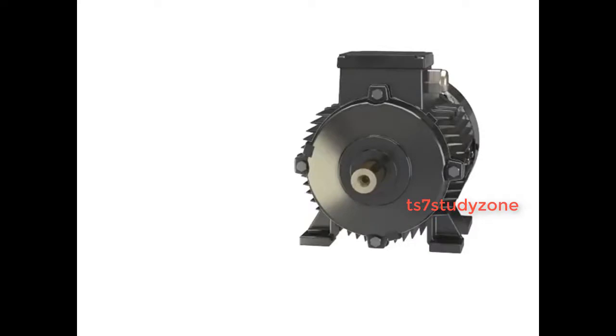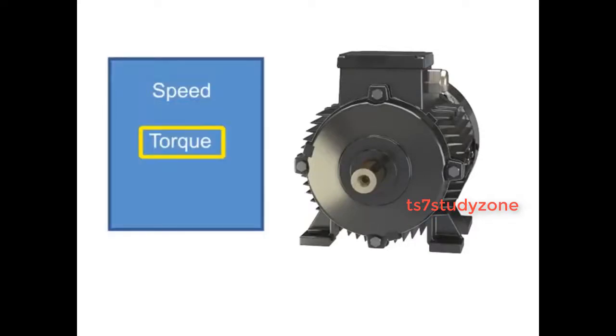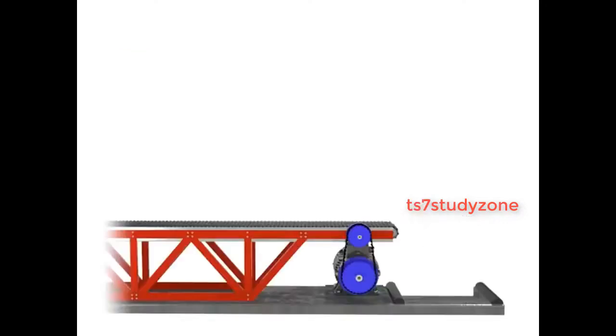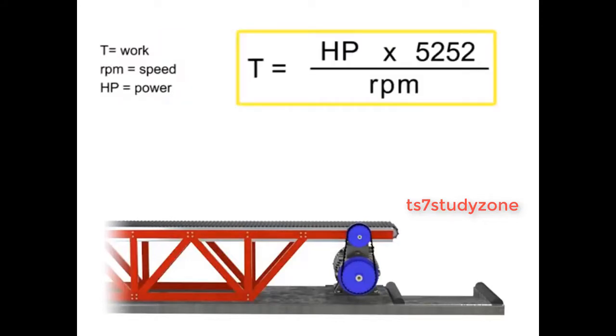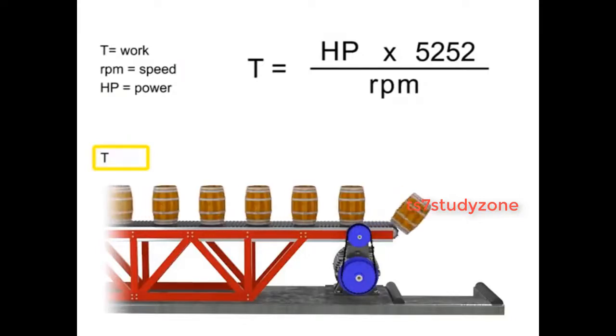The three factors that determine the type of work a motor can produce are speed, torque, and horsepower. You can manipulate the connection among speed, torque, and horsepower by understanding how they are related. The work accomplished here, the torque, is represented by the weight moving along the conveyor.